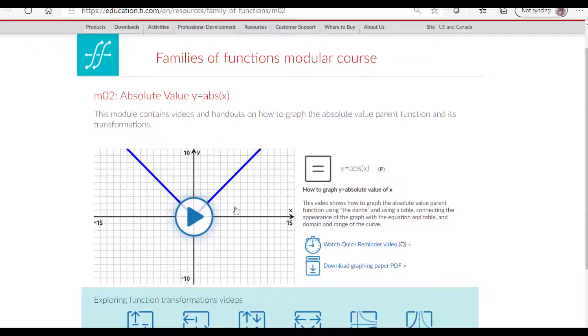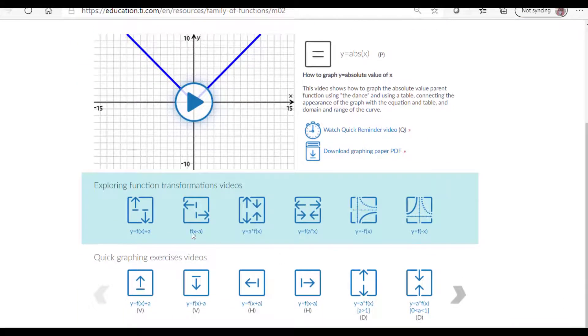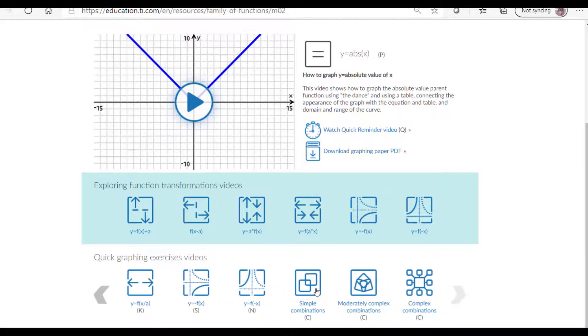Here is the parent function. How to graph the parent function. Here is a quick reminder video. The blue box has how to graph each transformation in general. And then underneath it are specific ones to in this case the absolute value function. Always ending in the combination transformations.